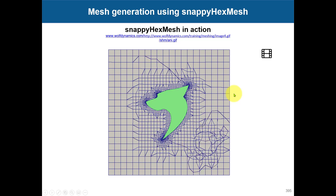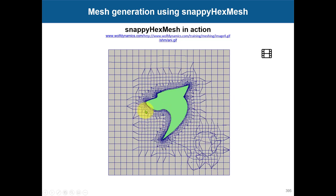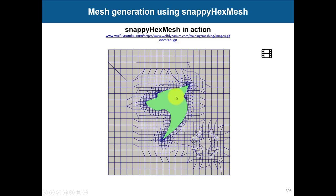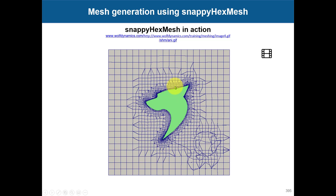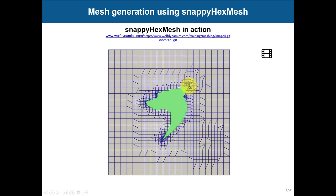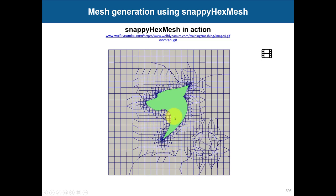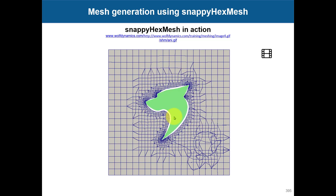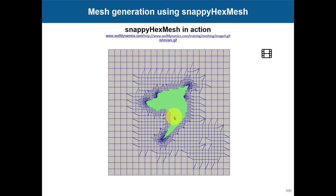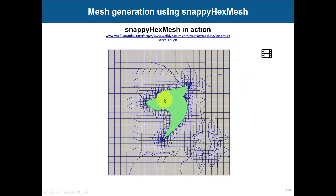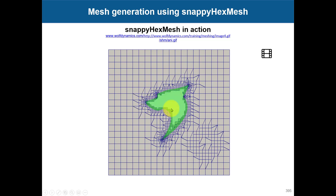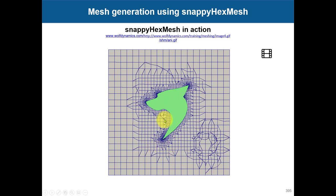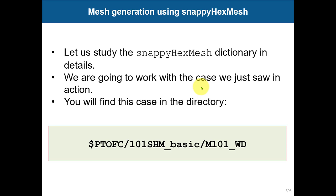While snappyHexMesh is working, it is always enforcing mesh quality. When adding the inflation layer, it's not doing any remeshing - it's just pushing away the mesh and inserting the inflation layer without refinement at the surface. This is why it can be tricky to get a good boundary layer mesh - it is related to the aspect ratio. For good boundary layer meshing, it's important to have fine surface mesh or fine background mesh to achieve a reasonable aspect ratio for the prismatic layer.